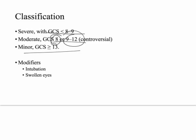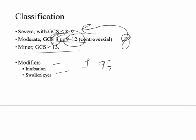Our patient, using the 15-point system, scored 8, so I would say he is at the severe level. Some modifiers include intubation and swollen eyes. If a person is intubated they can't respond verbally, so you give them a score of 1 on verbal but annotate it as 'T1' to indicate intubated. If their eyes are so swollen they can't open them, you use a similar modifier — score of 1 with a letter notation so you know it's not a true finding.